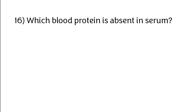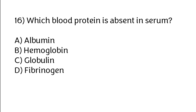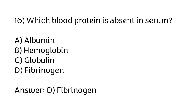Which blood protein is absent in serum? Options: Albumin, Hemoglobin, Globulin, Fibrinogen. The correct answer is Option D: Fibrinogen.